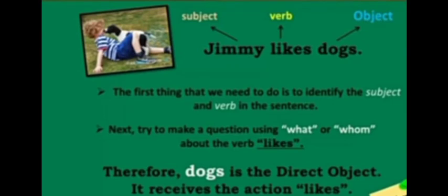For example, Jimmy likes dogs. The first thing we need to do is identify the subject and the verb in the sentence. Here, the subject is Jimmy and the verb is likes. Now, try to make a question using what or whom about the verb likes. What does Jimmy like? The answer is dogs. So here, dogs is the direct object and it receives the action likes.